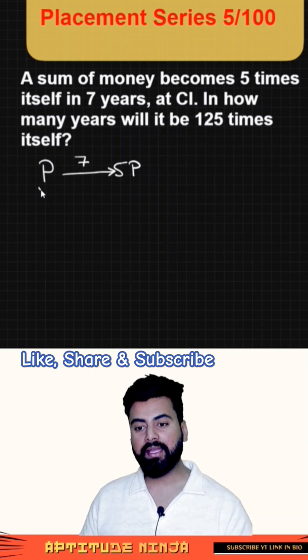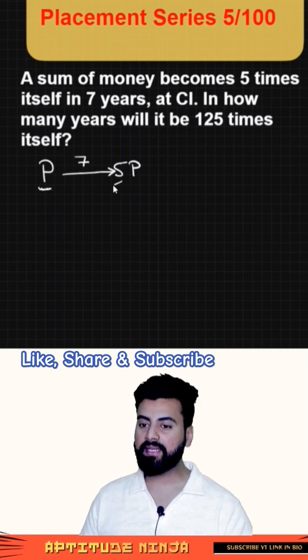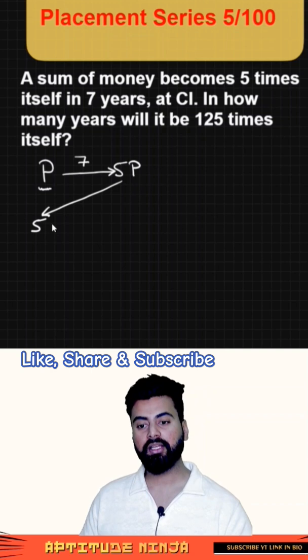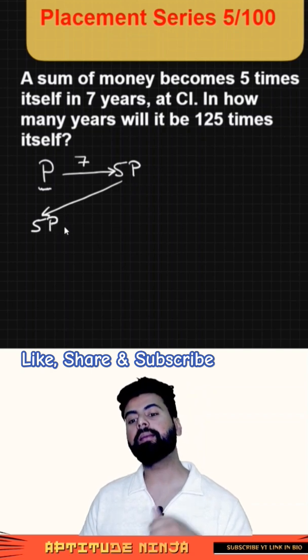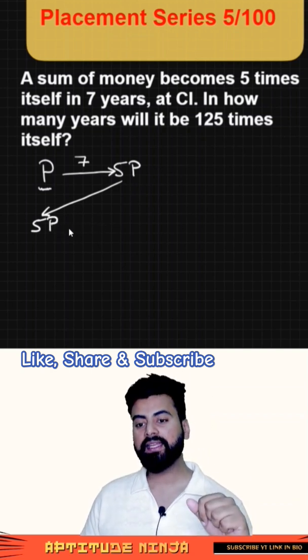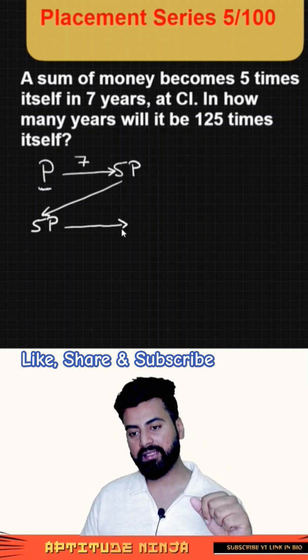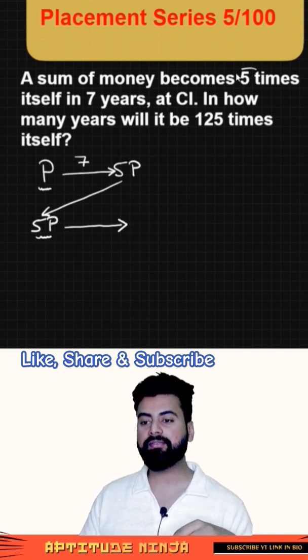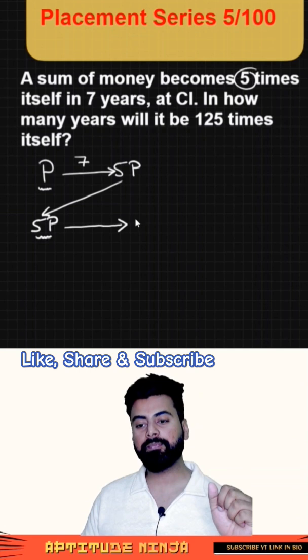For the first compounding period, the value of principal was P. But for the next compounding period, the value of principal needs to be updated. So the new value of principal will become 5P. Now if I ask you, at the end of the next compounding period, this principal 5P will become how much? You would say 5 times. What is 5 times of 5P? You would say 25.